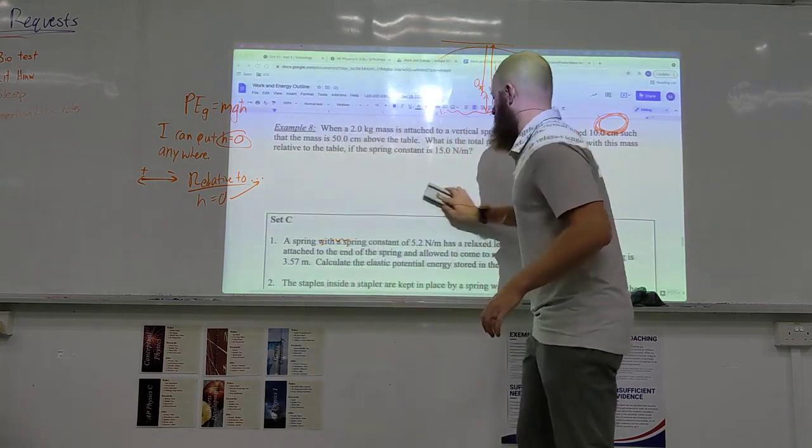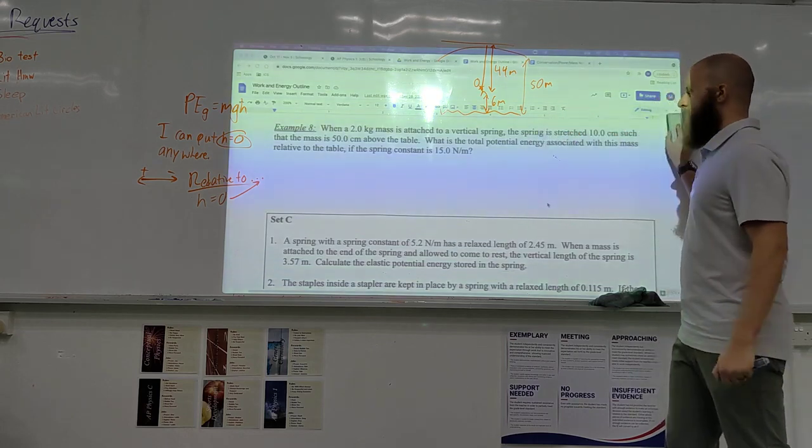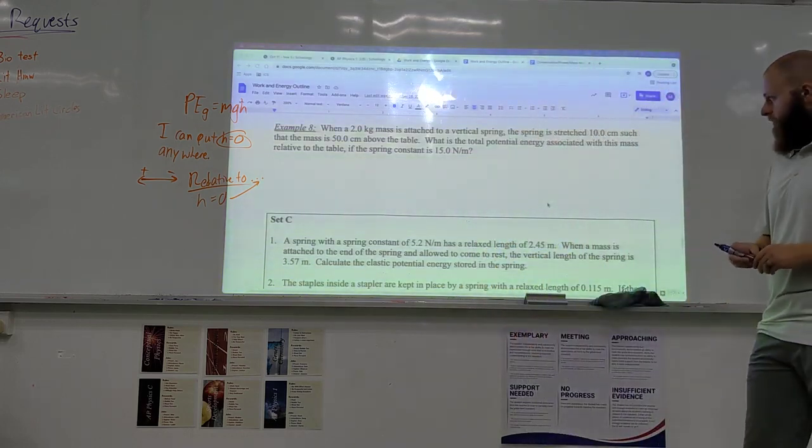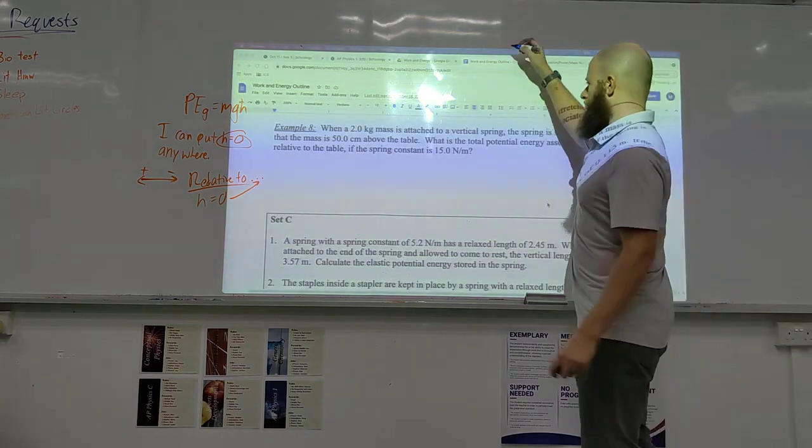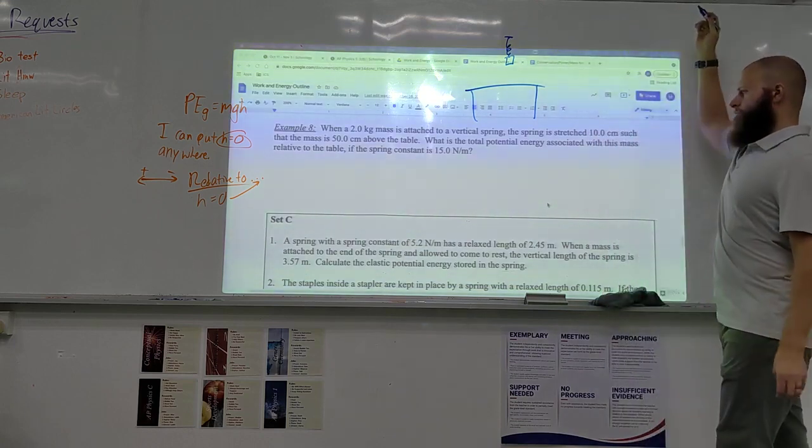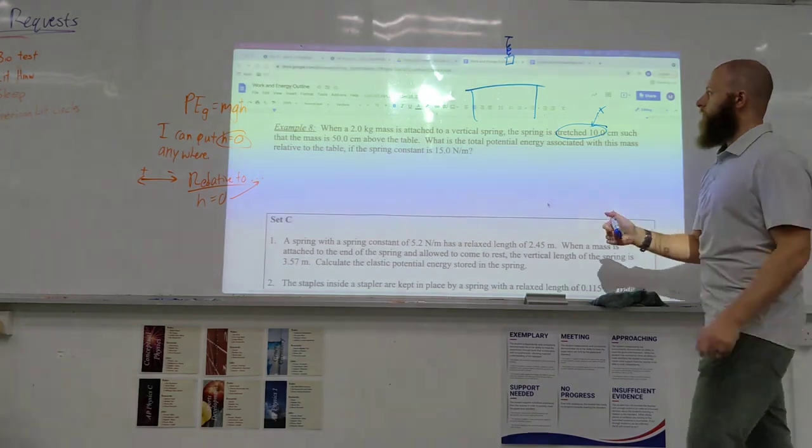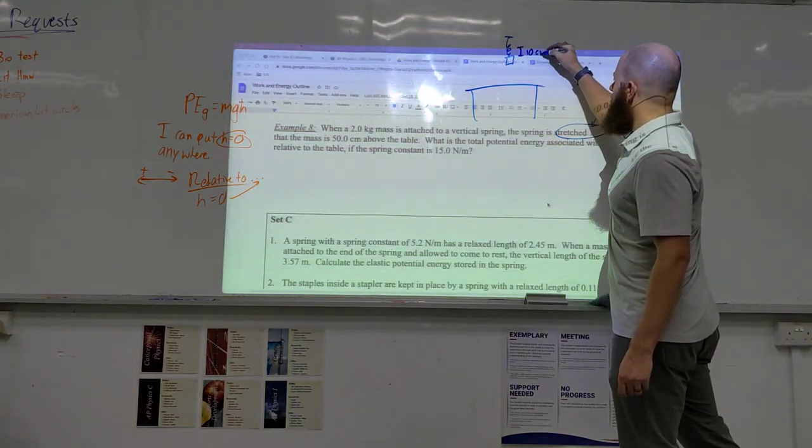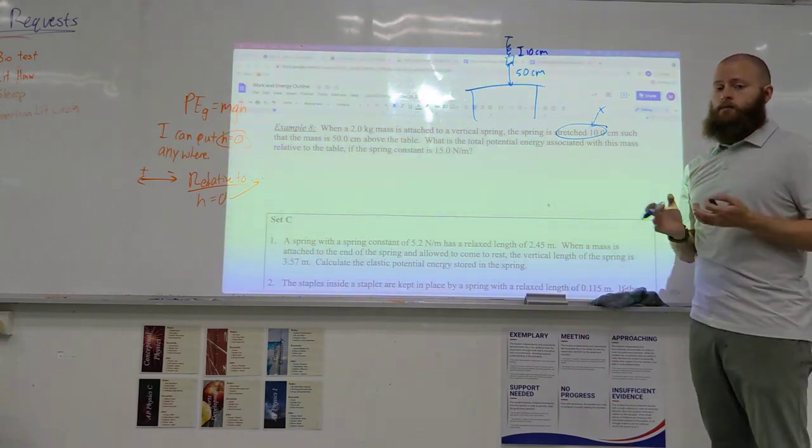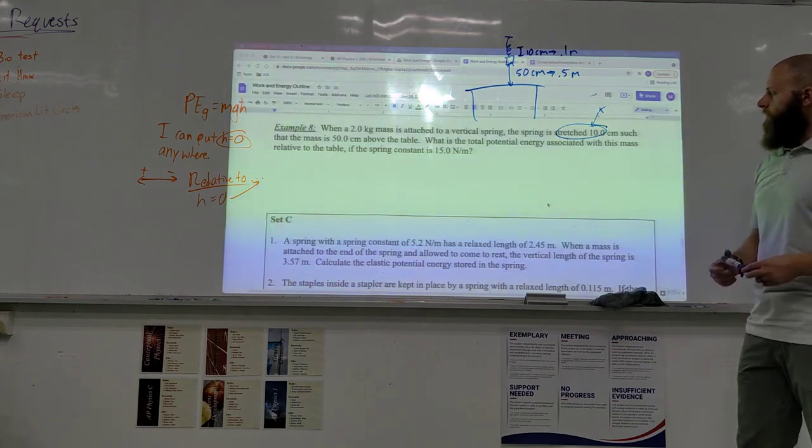Okay, so, when a 2 kg mass is attached to a vertical spring, the spring is stretched 10 centimeters, such that the mass is 50 centimeters above the table. What is the total potential energy associated with this mass relative to the table, if the spring constant is 15 newtons per meter? So, this would look something like I have my table here, and then I have this spring suspended from something, and I have a block here. So, this would mean it's stretched, so this would be my X. So, for this one, I didn't need to subtract. So, this would be 10 cm, this here is 50 cm. Now, remember, am I allowed to use centimeters for distance? No, not allowed, so I need to change this to 0.1 meter, 0.5 meters. So, that's kind of the diagram there.